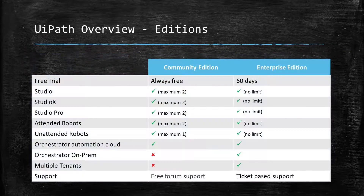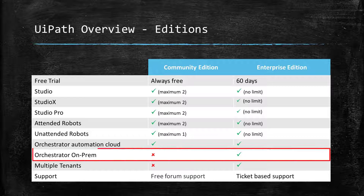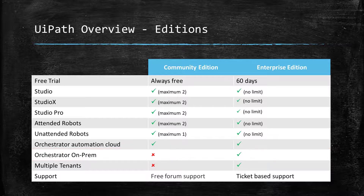UiPath comes in two editions: an Enterprise Edition and a Community Edition. Both editions have Studio, Robot, and Orchestrator, and Robot and Studio are functionally the same with both editions. However, there are a few differences when it comes to the Orchestrator. The biggest difference is that the on-premise version of Orchestrator is available only with the Enterprise Edition, meaning Enterprise Edition users can choose either on-premise or cloud. A few other features that come with Enterprise Edition include support for multiple tenants, unlimited number of studios and robots, and ticket-based support.